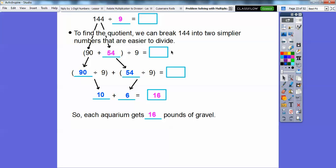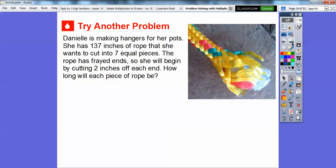The hard part was figuring out how many total pounds there were and then dividing that. If this is a big number, then break this big number up into smaller numbers that are easier to divide by nine. Let's try another one. Danielle is making hangers for her pots. She has 137 inches of rope that she wants to cut into seven equal pieces. The rope has frayed ends, so she will begin by cutting two inches off each end.